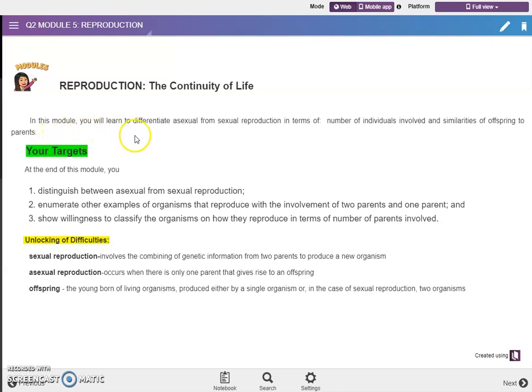So in this module, you will learn to differentiate asexual from sexual reproduction in terms of number of individuals involved and similarities of offspring to parents. Our objectives are first to distinguish between asexual from sexual reproduction, second enumerate other examples of organisms that reproduce with the involvement of two parents and one parent, and show willingness to classify the organisms on how they reproduce in terms of number of parents involved.